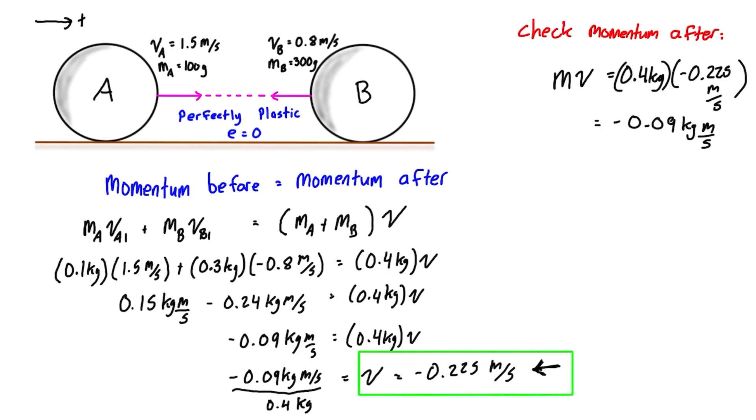I also just want to demonstrate one thing here—it's kind of extra and might not have anything to do with the problem you're asked for. But when we have a perfectly plastic collision, the maximum amount of energy is lost. So we can check the kinetic energy of our system before impact and after impact and compare them to see how much energy has been lost.